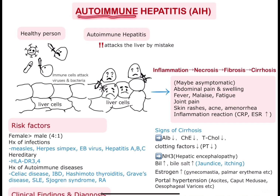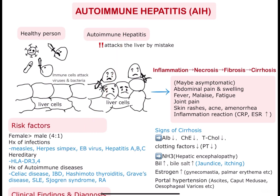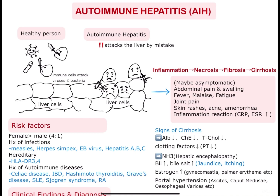As it is an autoimmune disease, it is often associated with a history of other autoimmune diseases, especially celiac disease, inflammatory bowel disease, Hashimoto's thyroiditis, Graves' disease, SLE, Sjögren's syndrome, and rheumatoid arthritis.